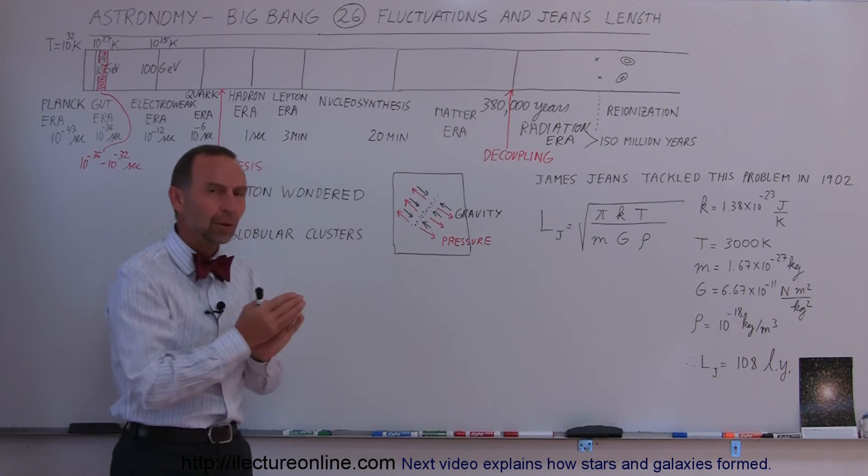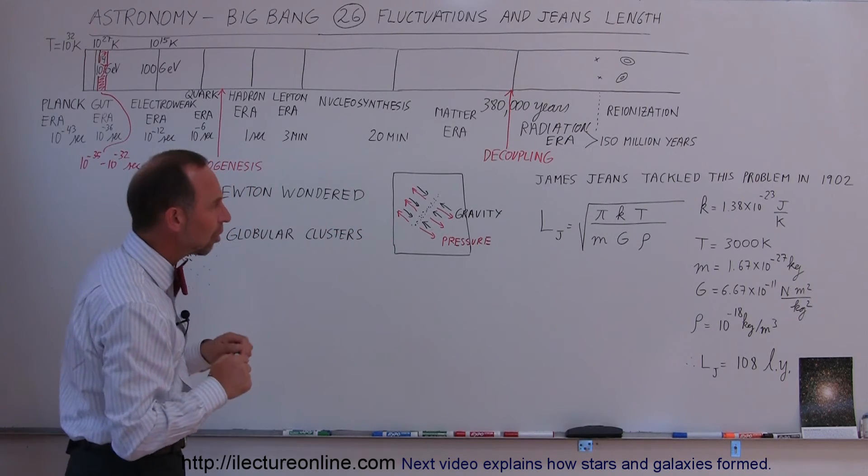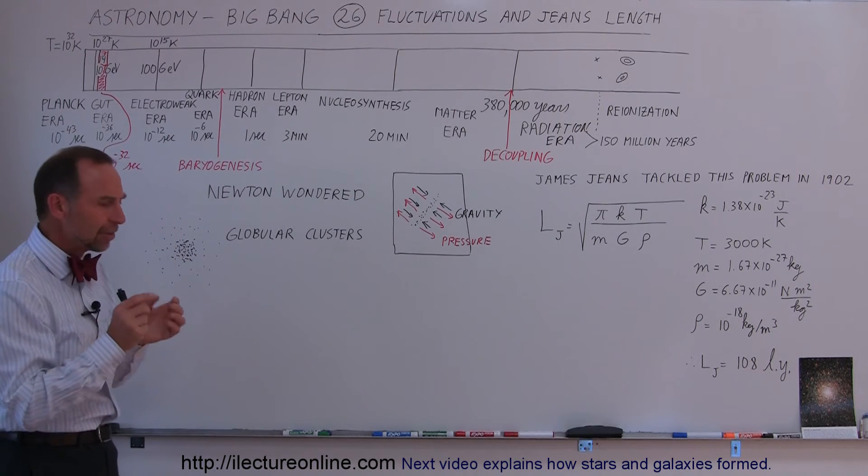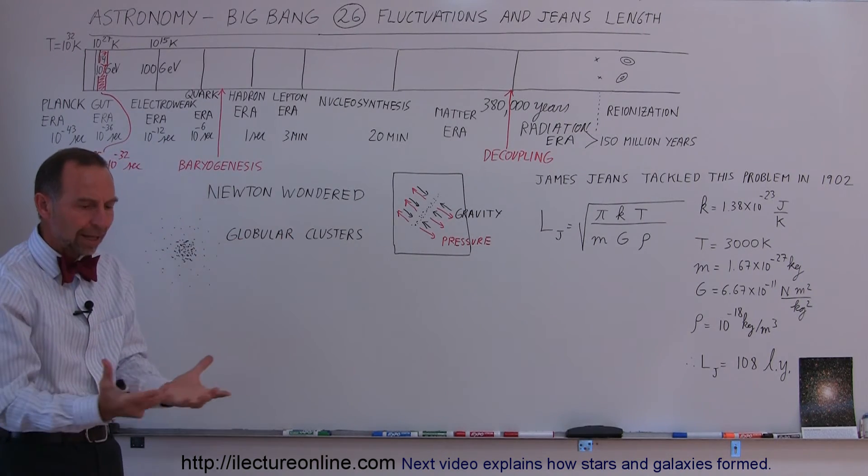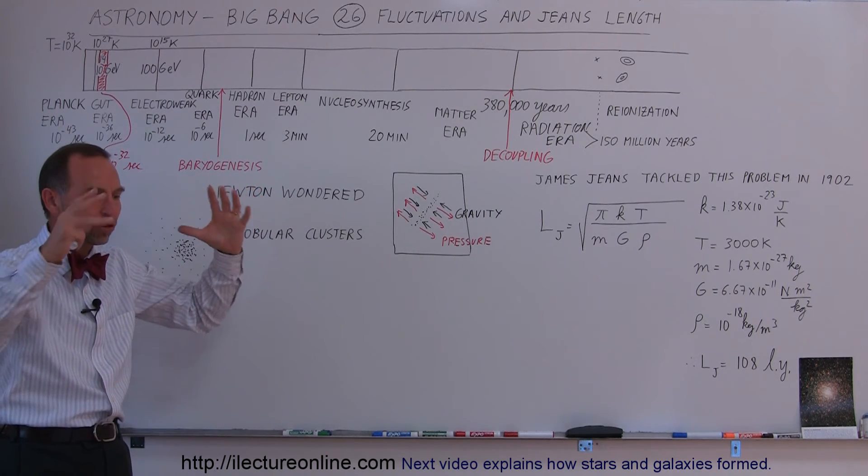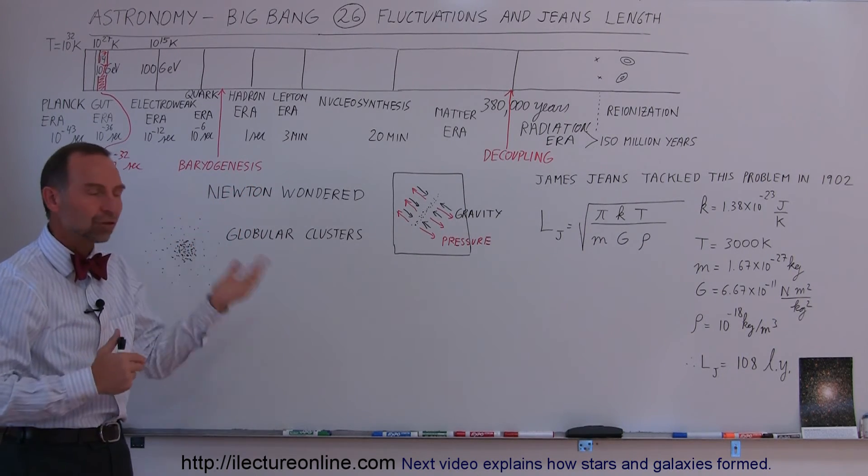And the relationship with Jeans' law here, or Jeans length. And so what we're thinking is that in the very beginning there were regions about 100 light years across that were under the influence of gravity was able to push matter together close enough for stars to form.